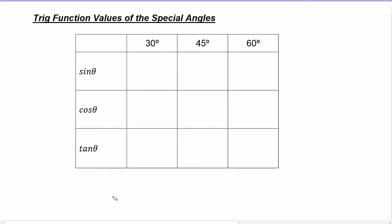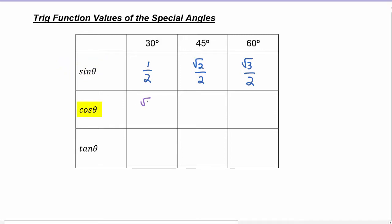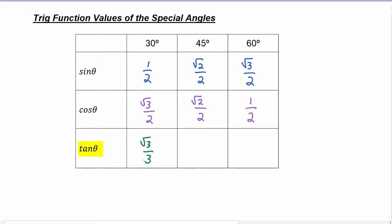For convenience, we're going to make a chart of the trig function values of the special angles. Sine of 30 degrees is one-half, sine of 45 degrees is radical two over two, and sine of 60 degrees is radical three over two. Cosine of 30 degrees is radical three over two, cosine of 45 degrees is radical two over two, and cosine of 60 degrees is one-half. Tangent of 45 degrees is one and tangent of 60 degrees is radical three.